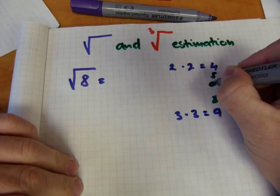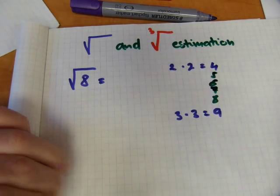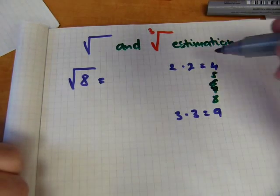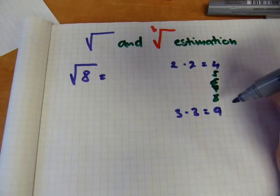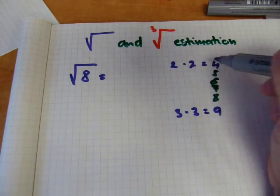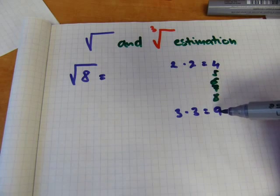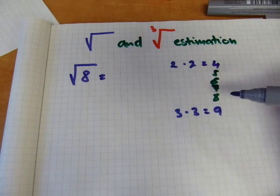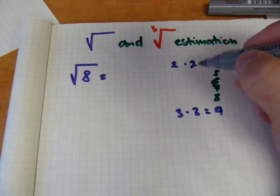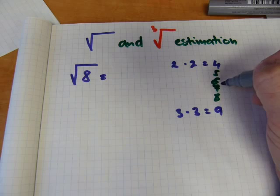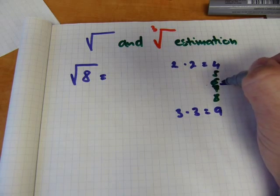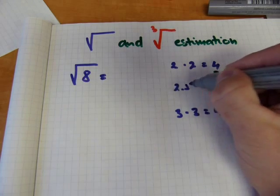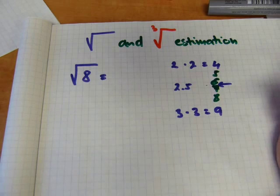Between 4 and 9 we have 5, 6, 7, 8, and 9. So if the square root of 4 is 2 and the square root of 9 is 3, then the square root of 8 will be between 2 and 3. A number between 2 and 3 would be 2 and a half, just like a number between 6 and 7 would be 6 and a half.